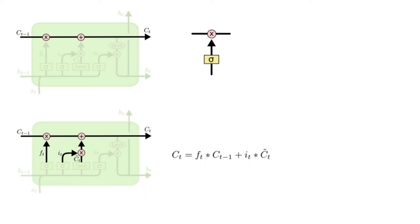In the case of the language model, this is where we would actually drop the information about the old subject's gender and add the new information as we decided in the previous steps.